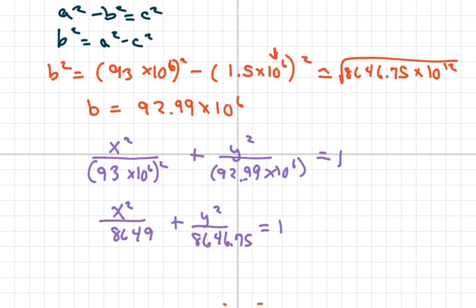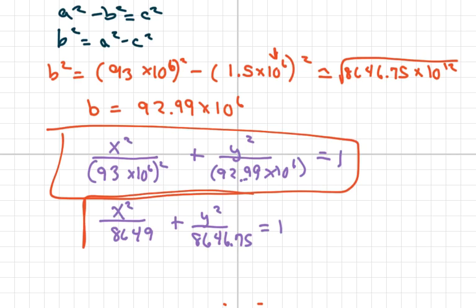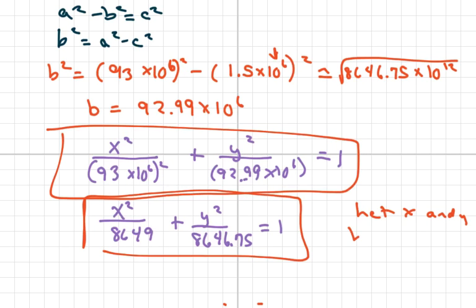Both forms are correct — we just simplified by letting x and y be in millions of miles. The next problem is the same thing but for Mars instead of Earth; the next three problems will be very similar. Thank you and have a nice day!